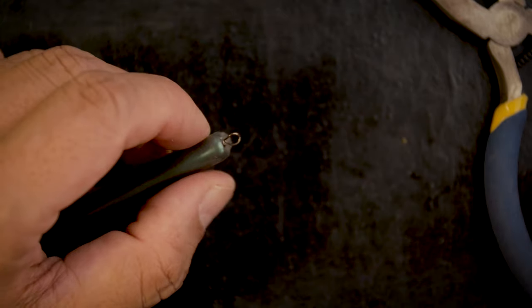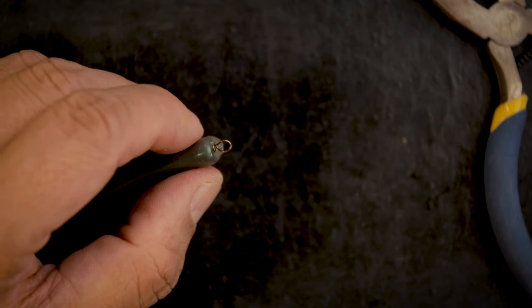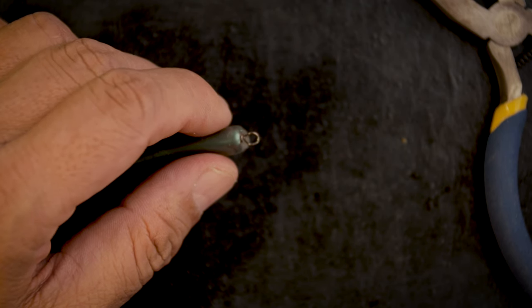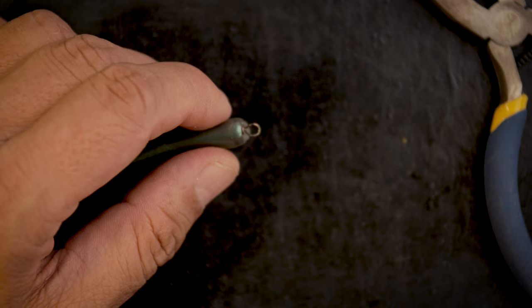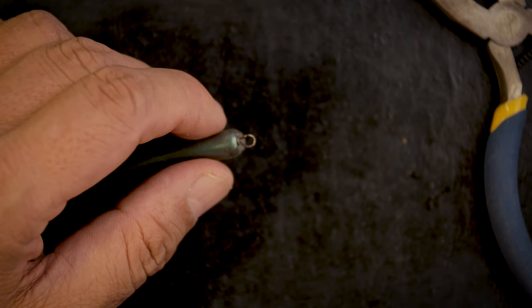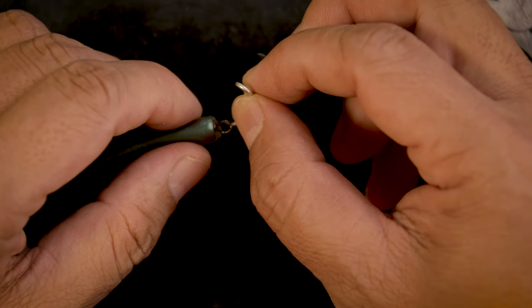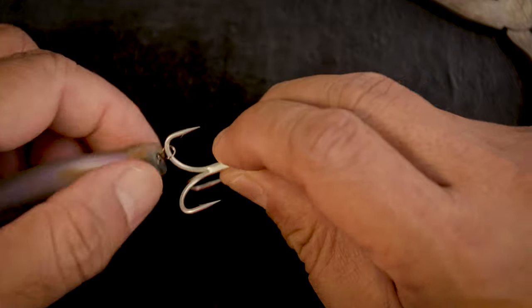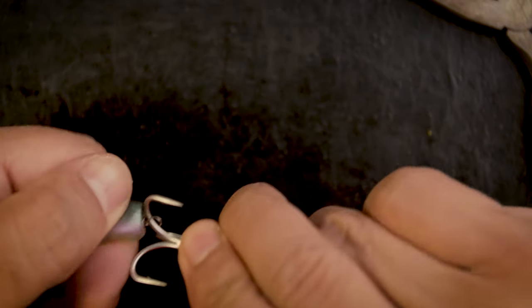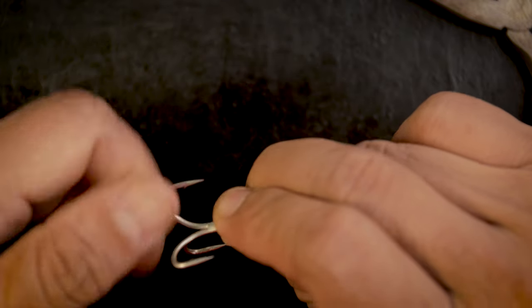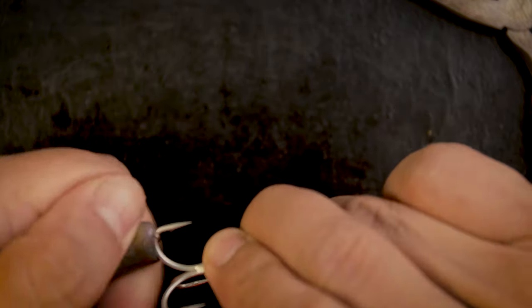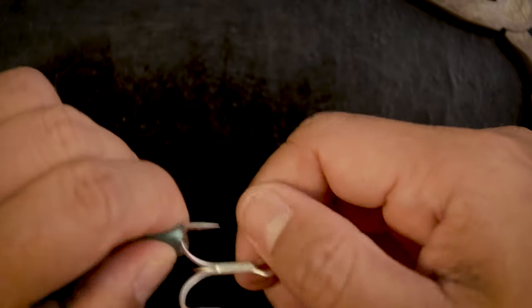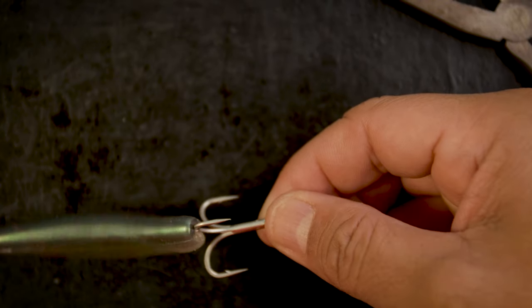And then from there you could take your hook, you could take whatever. Take for example we want to mount this on a hook - find a hook here, this hook right here. Go like that and then twist until it's secured to the hook just like that. You'll see it won't move. Look at that, just like that.